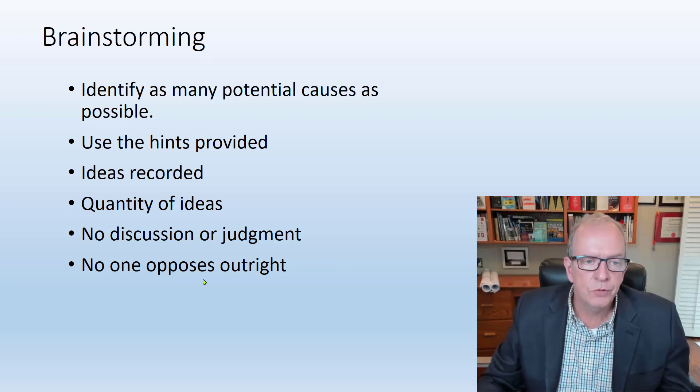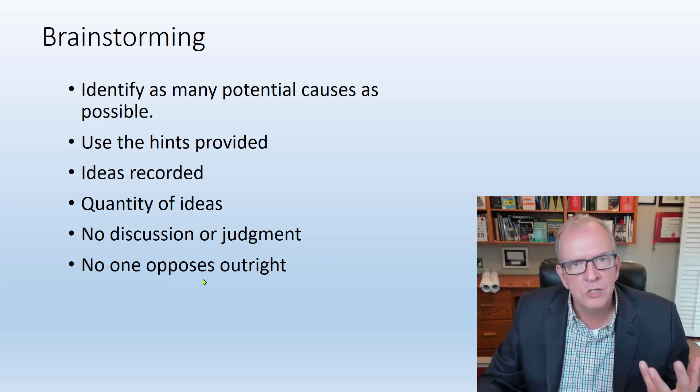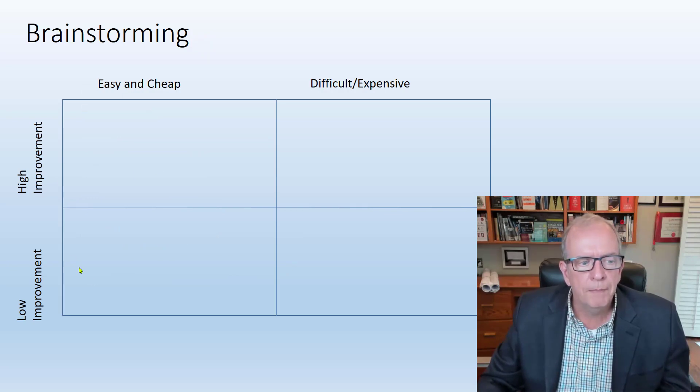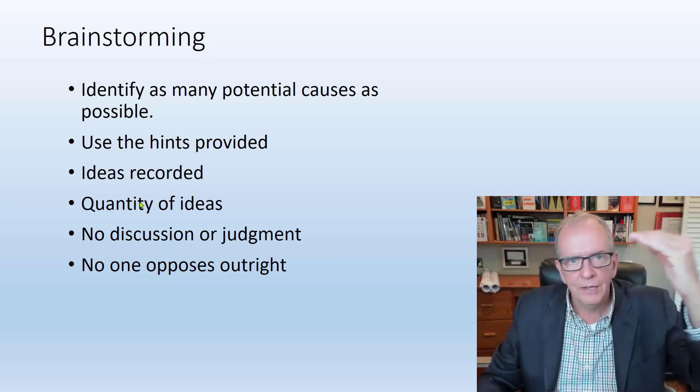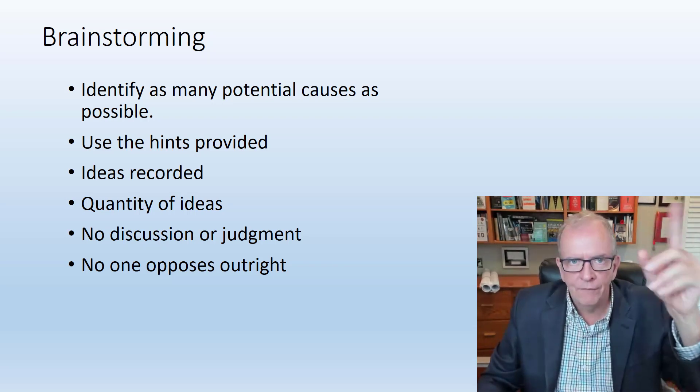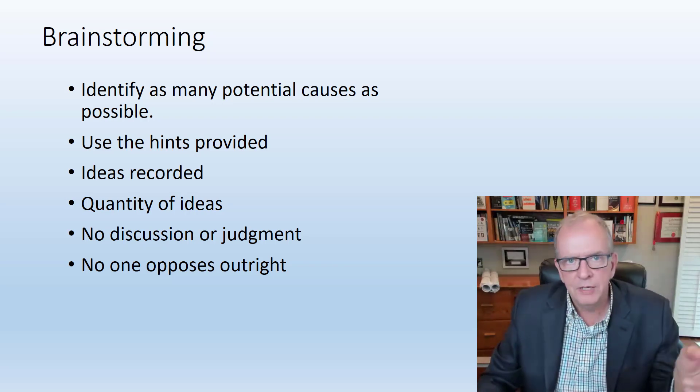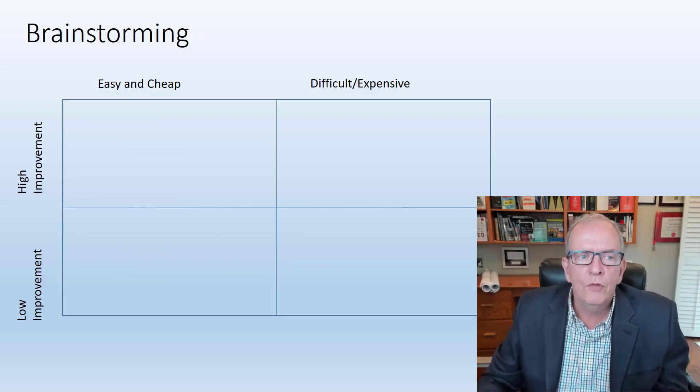So again, how do we do that? How do we make that happen? Well, I like matrixes. You've probably seen me use the Eisenhower matrix for time management in the past. And so what we can do is we can set up a matrix that looks something like this. Low improvement, high improvement, easy and cheap, difficult, and expensive. So you've got basically four quadrants. And when you are recording the ideas, you can number them then. So if you've got a list of bullet points, you could initially have number one, idea number one, idea number two, idea number three, and so forth. And so they're all numbered.